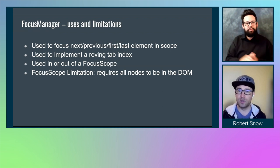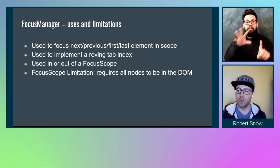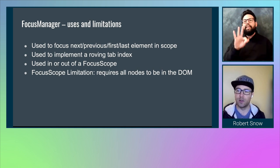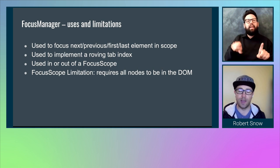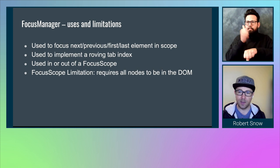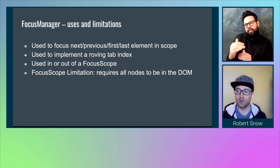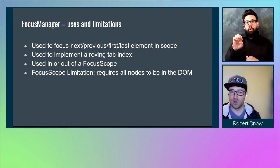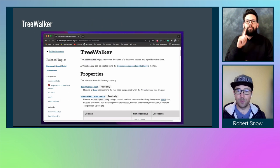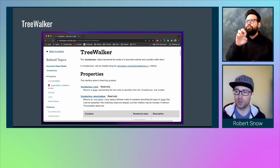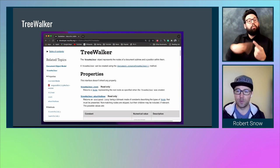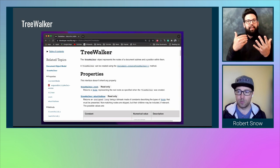The FocusManager can move focus forwards, backwards, and to the first and last elements within the scope. We use it to implement things like roving tab index, such as you might find in a non-native radio group, and in several of our components where navigating uses arrow keys. It has one limitation: it requires all nodes to be in the DOM. This has to do with its implementation, which utilizes something called a DOM TreeWalker in order to move focus around. The TreeWalker API enables us to traverse the DOM searching for tabbable or focusable elements inside of the FocusScope, and we can do this with a filter supplied to the TreeWalker when we create it.